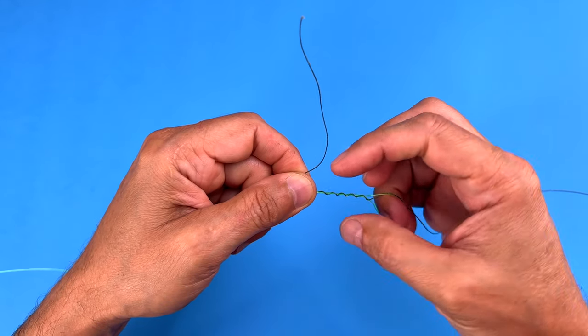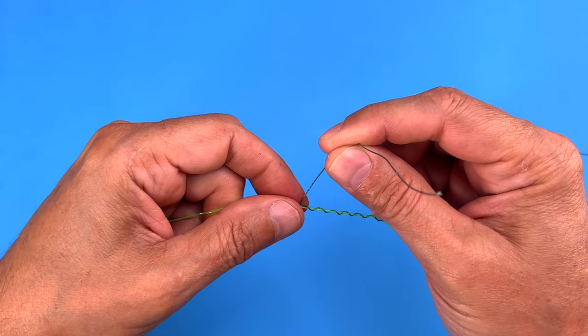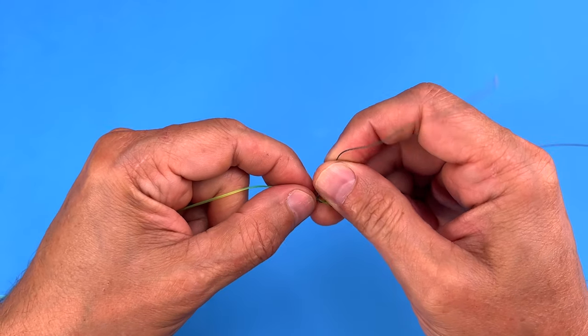Now once you have that seven times, you're going to wrap it back towards the main line, but you want to wrap it and try to get it in between the twists. I'm going to call them twists, as you can see here.